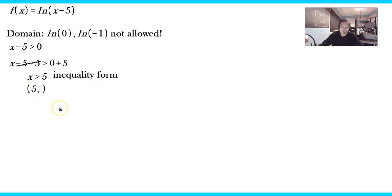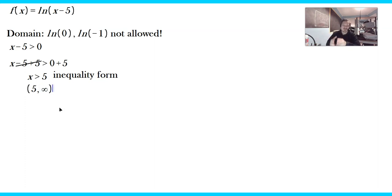We also want the domain in interval notation. To express the domain in interval notation, you put 5 with a parenthesis to the left because 5 itself is not included. Then any value to the right of 5 — like 5.1, 10, 90, 100 — can be plugged in, so here you put infinity.